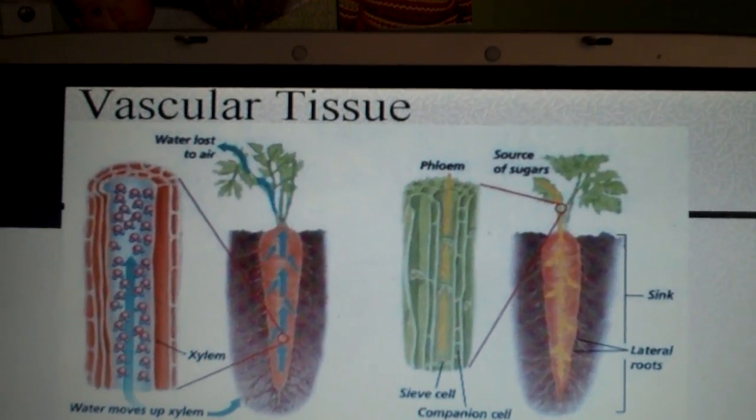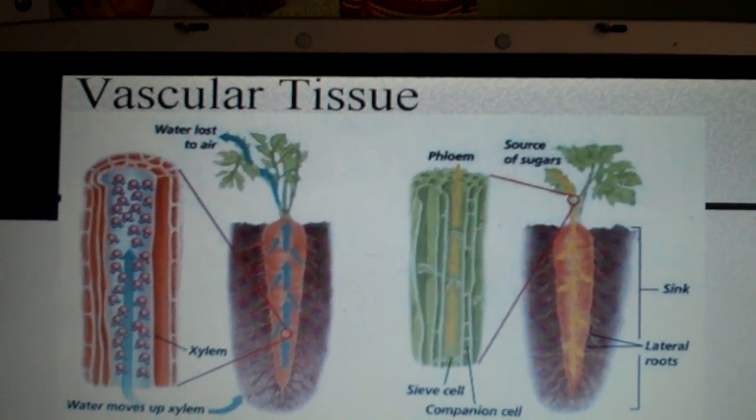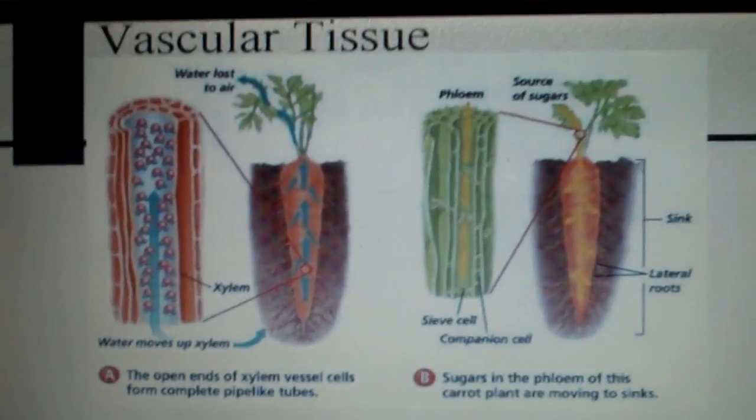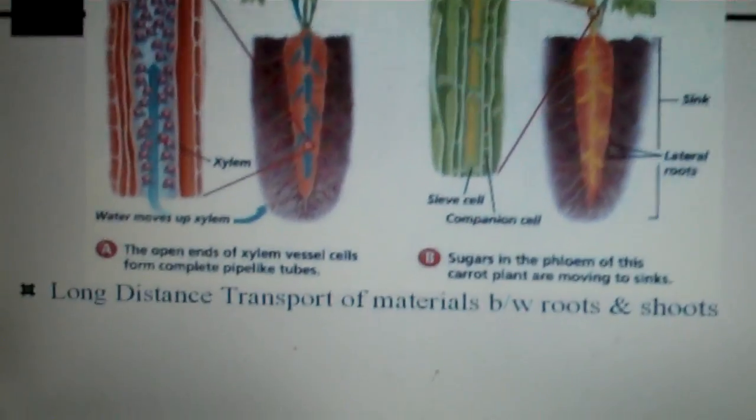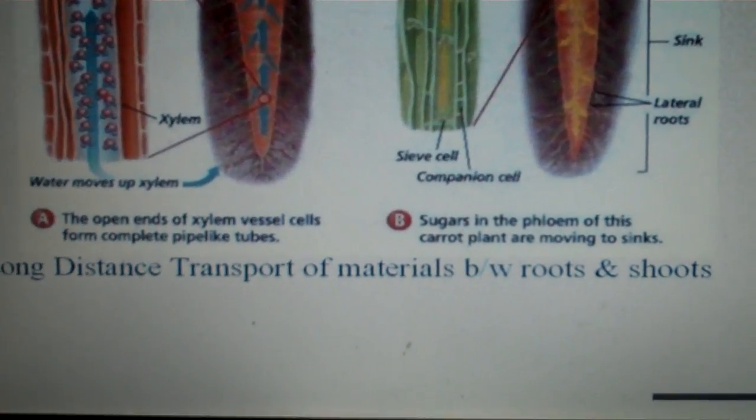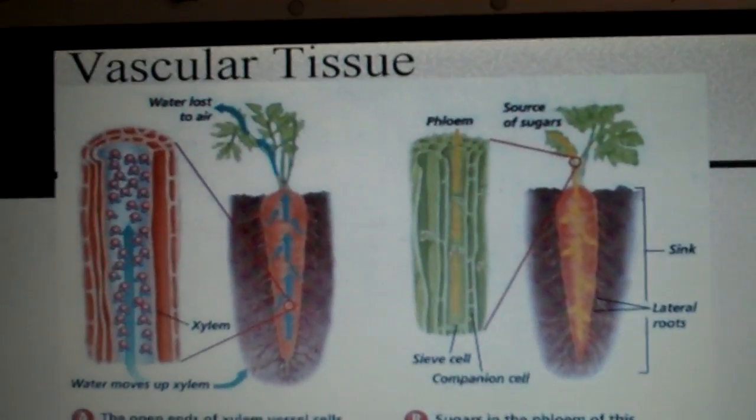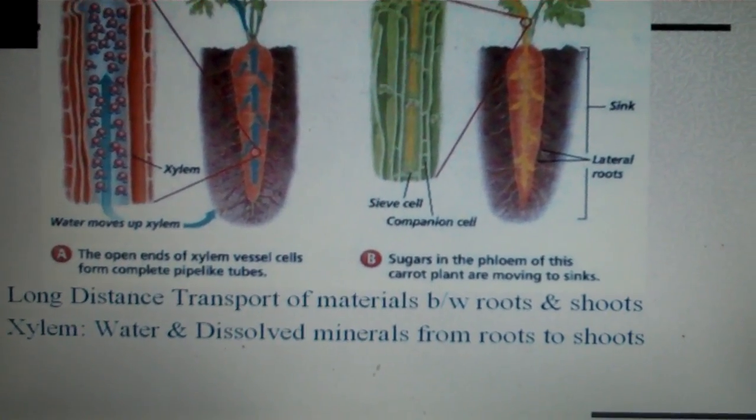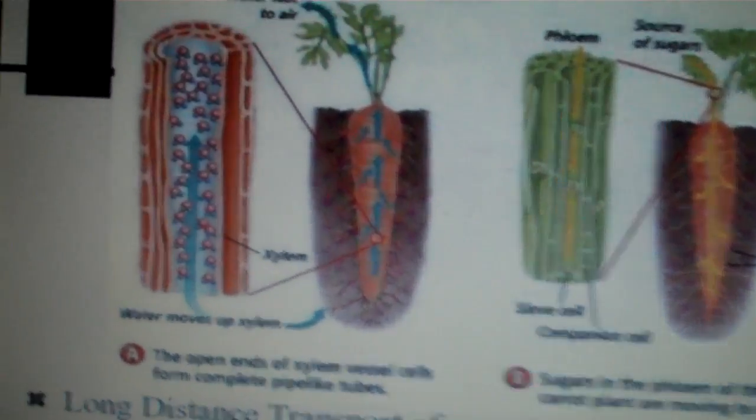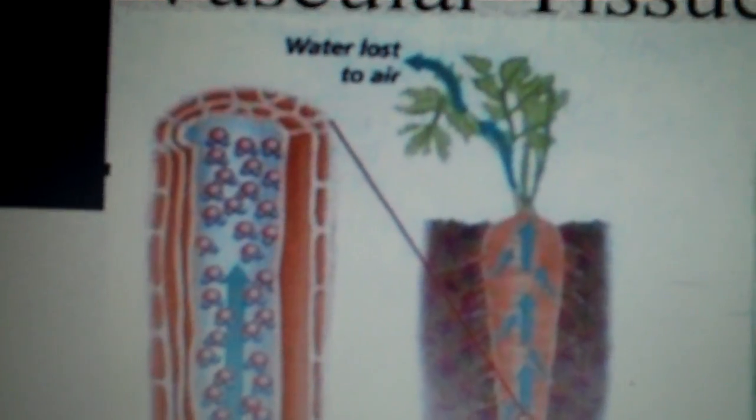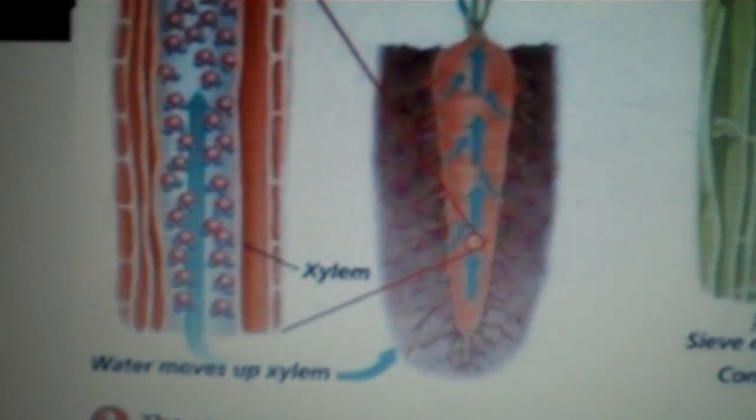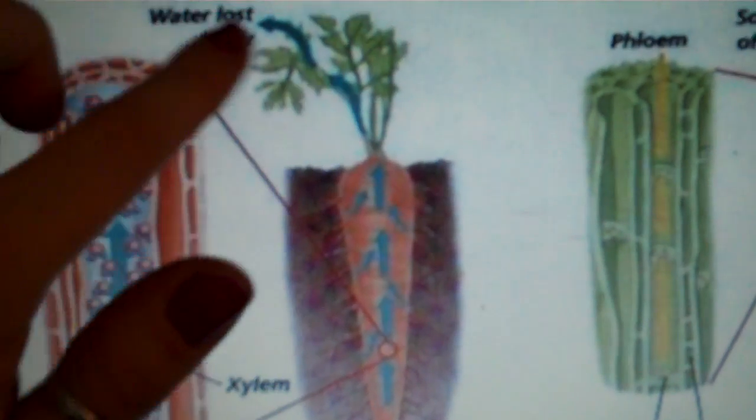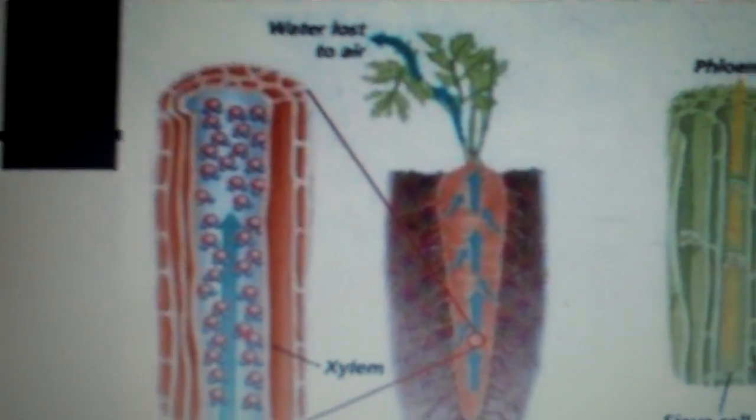The second type of tissue is vascular tissue. There's two kinds of vascular tissue in plants. We have the xylem and the phloem. The xylem, or both of these, are responsible for long distance transport of materials between roots and shoots. The first one is xylem. It's where water and dissolved minerals move from roots to shoots. So this is a picture of a carrot and the water is going to move from the roots up the carrot to the leaves where it's needed for photosynthesis.